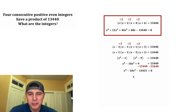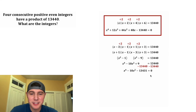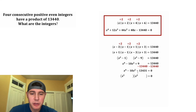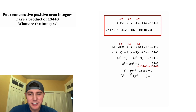Then we subtract 13,440 from both sides and end up with x to the fourth minus 10x squared minus 13,431 equals zero. This is significantly easier than the original expansion.